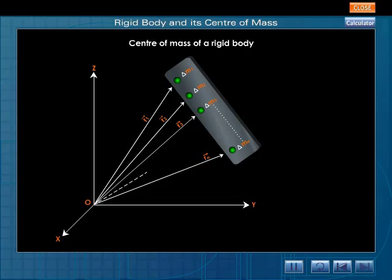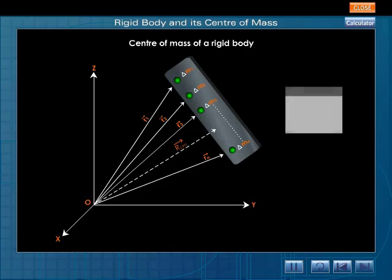Let RCM be the position vector of the center of mass. RCM is given by the relation RCM is equal to sigma delta M I R I by sigma delta M I.